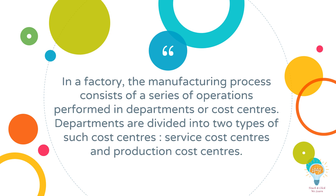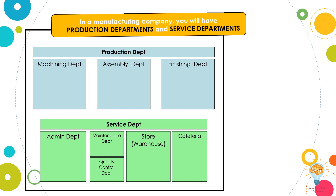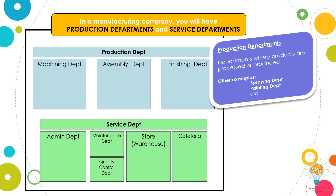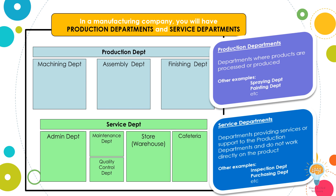Departments are divided into two types of cost centers: service cost centers and production cost centers. A production department performs the actual manufacturing operations that physically change the units being processed. A service department is an essential part of the organization, but it does not work directly on the product. The function of a service department is to serve the needs of the production departments and other service departments.